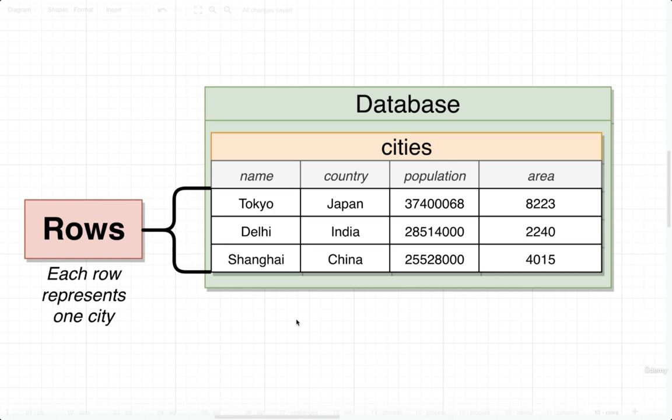That's a little bit of the basics of database terminology. We have tables. Tables have many columns that store information about different properties. And each record inside of a table is referred to as a row. Now that we've got database terminology together and an idea of how to design this cities table, let's start to actually build this thing out in the next video.